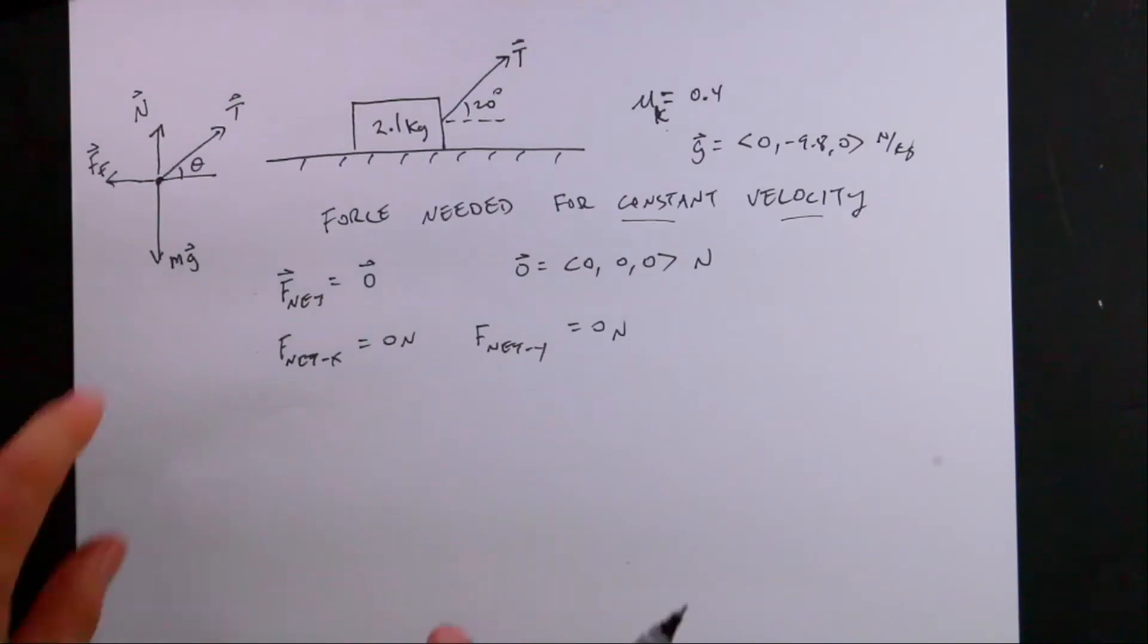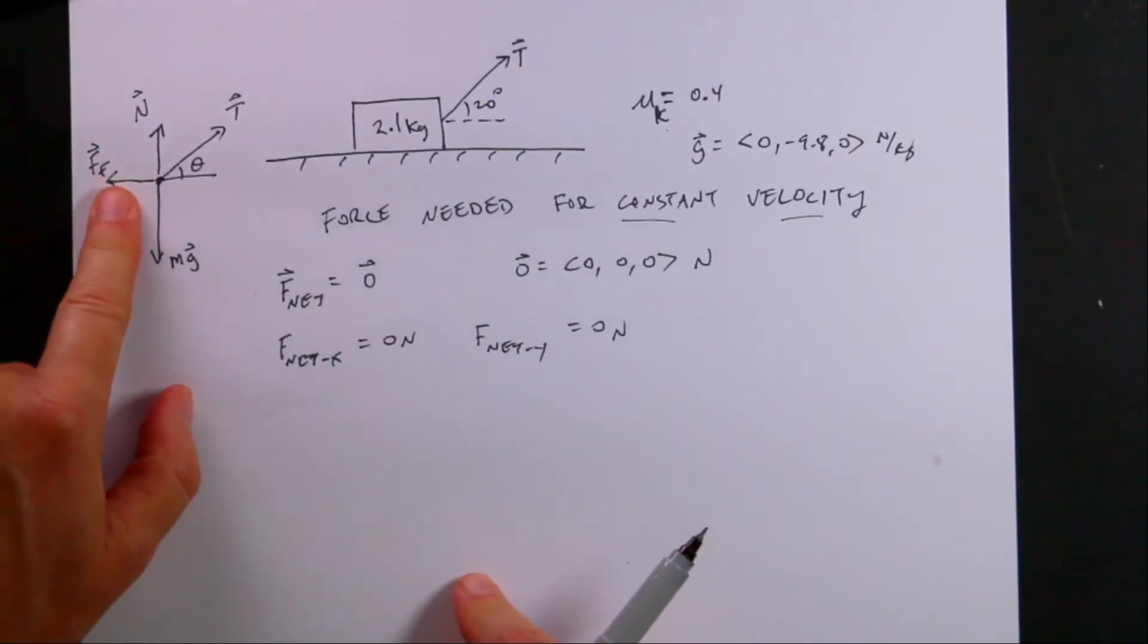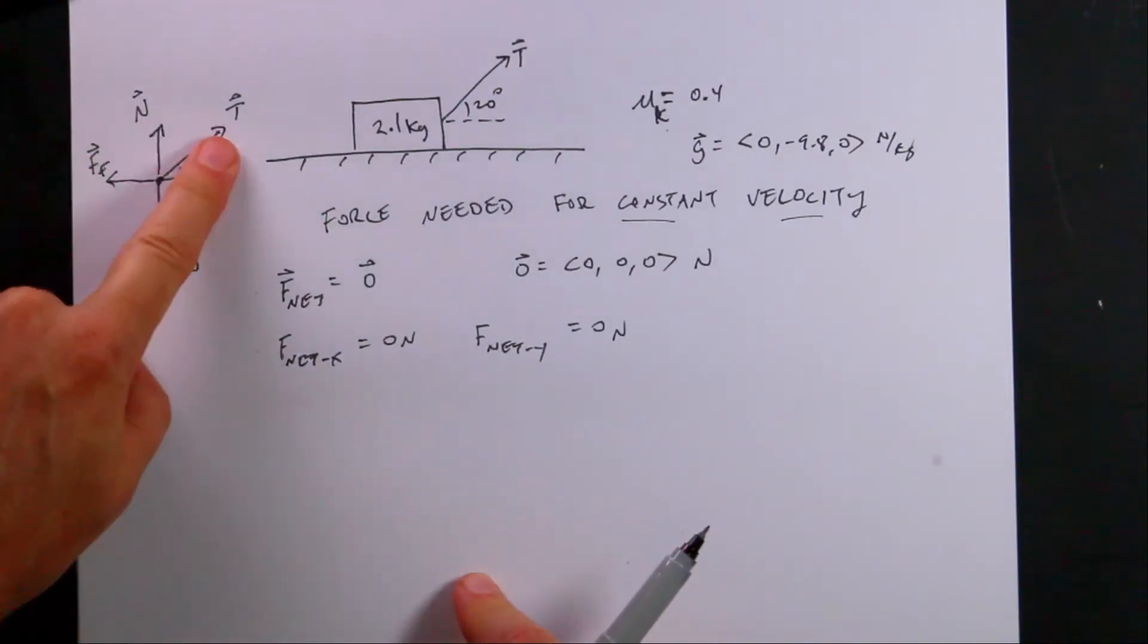I have four forces acting on it. I have the gravitational force. I have the backwards pushing friction force. I have the normal force. I have the tension. And I want to find the magnitude of this force.